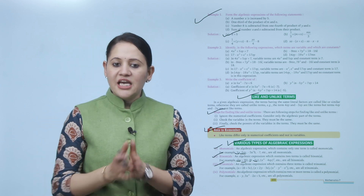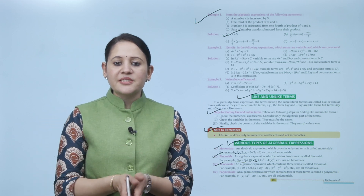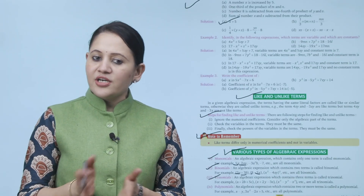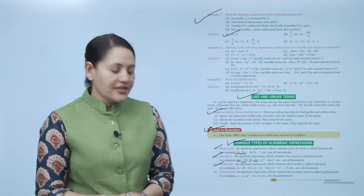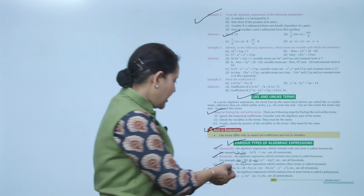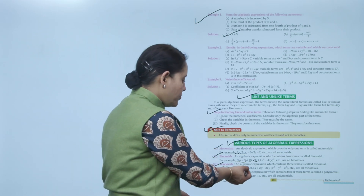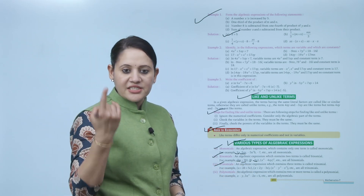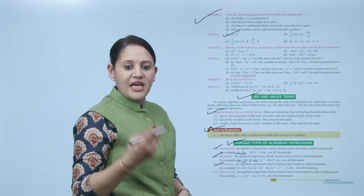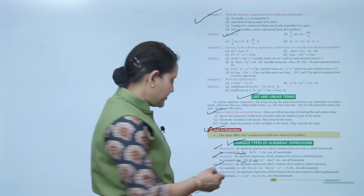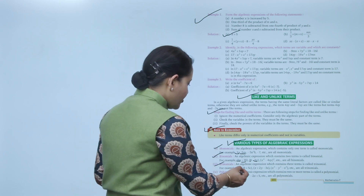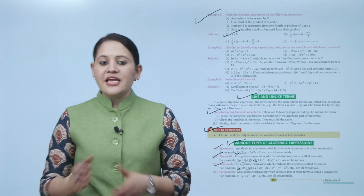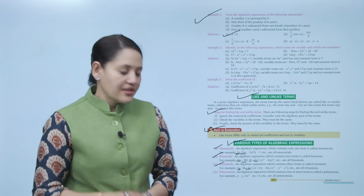Third is trinomial. 'Tri' means 3. An algebraic expression which contains three terms is called a trinomial. For example, a + 2b + 5c has three terms: the first is a, the second is 2b, and the third is 5c. So it is a trinomial.